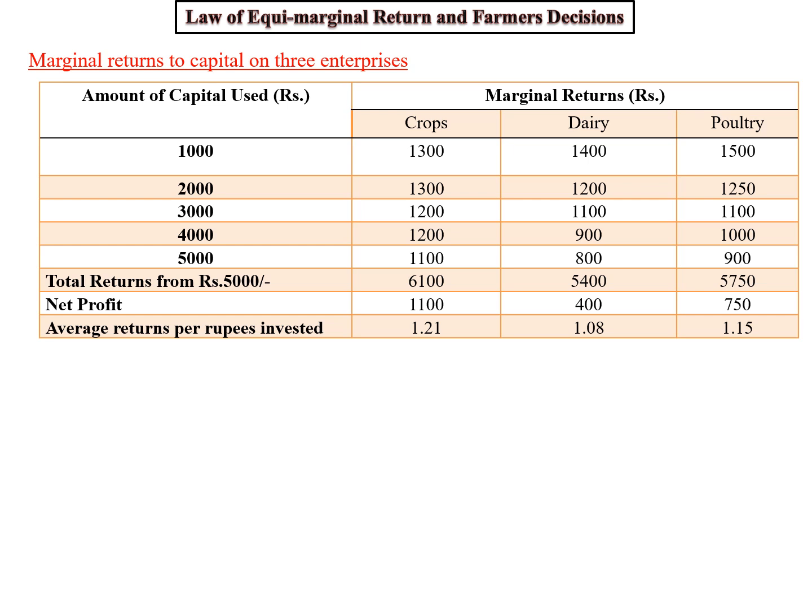In subsequent investments of 1,000 rupees each, with a total investment of 5,000 rupees, it has been observed that the farmer will get 6,100 rupees from crop, 5,400 rupees from dairy, and 5,750 rupees from poultry.